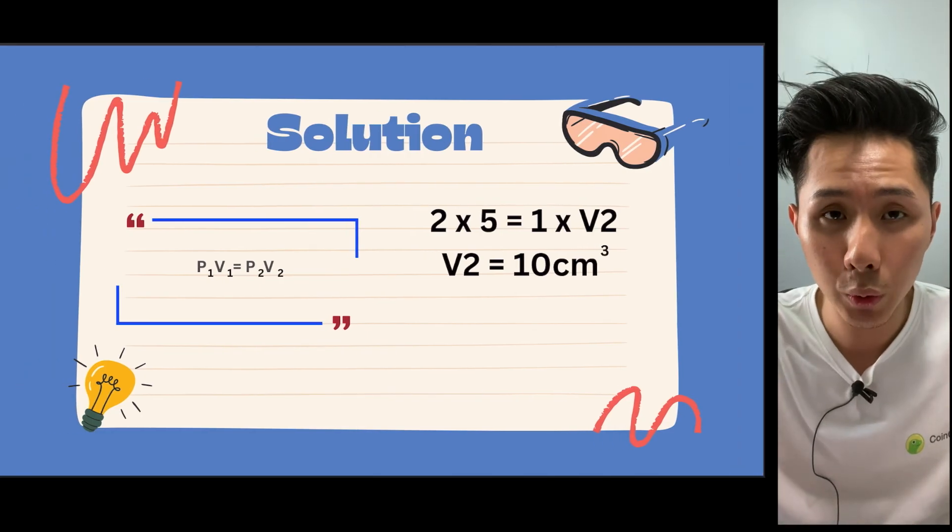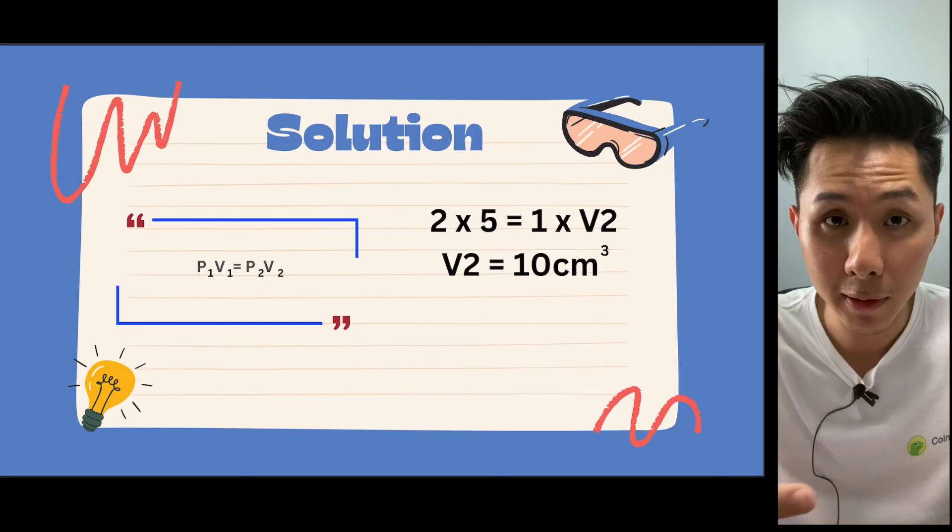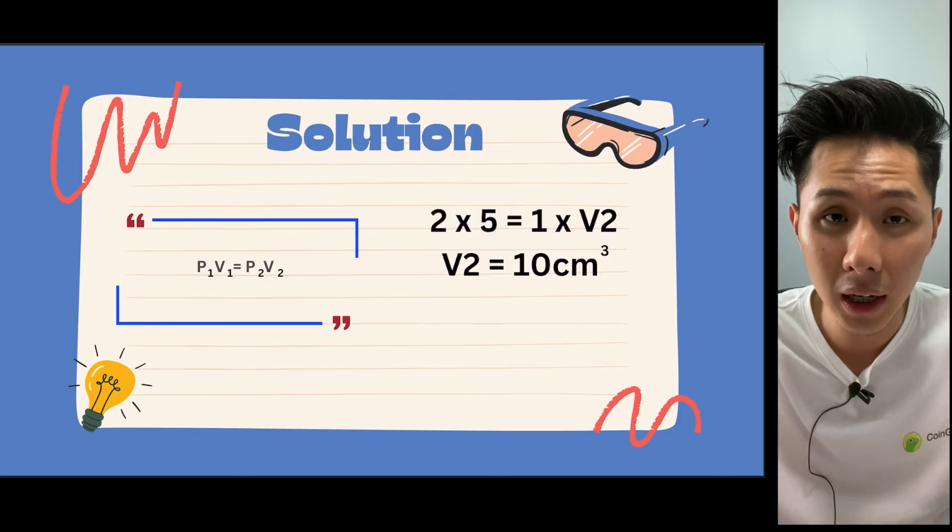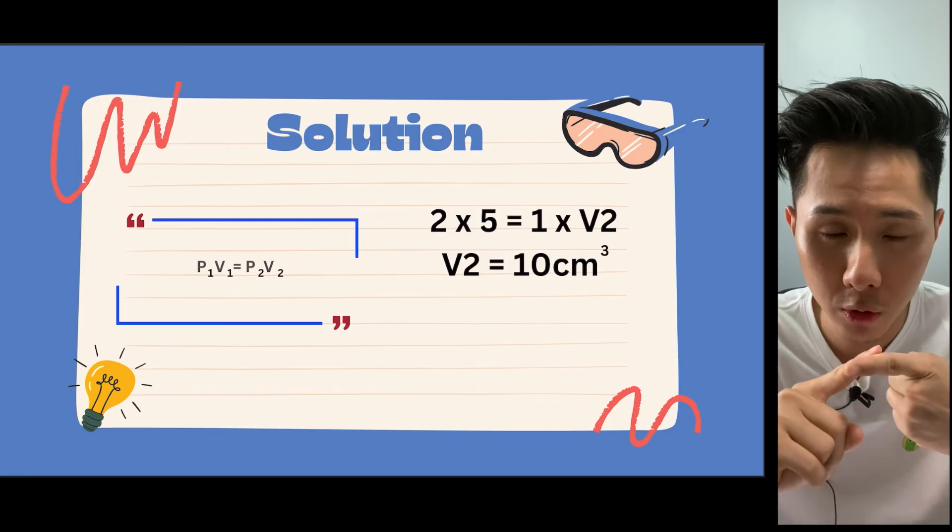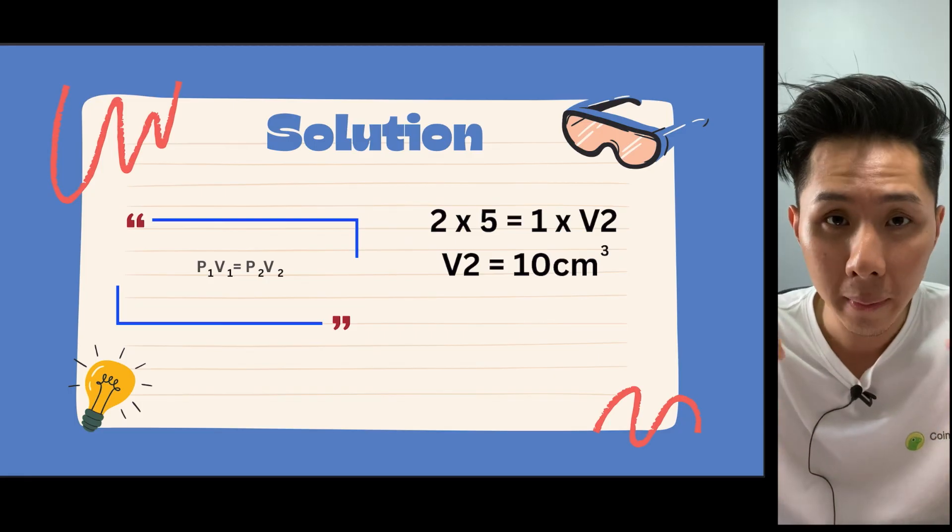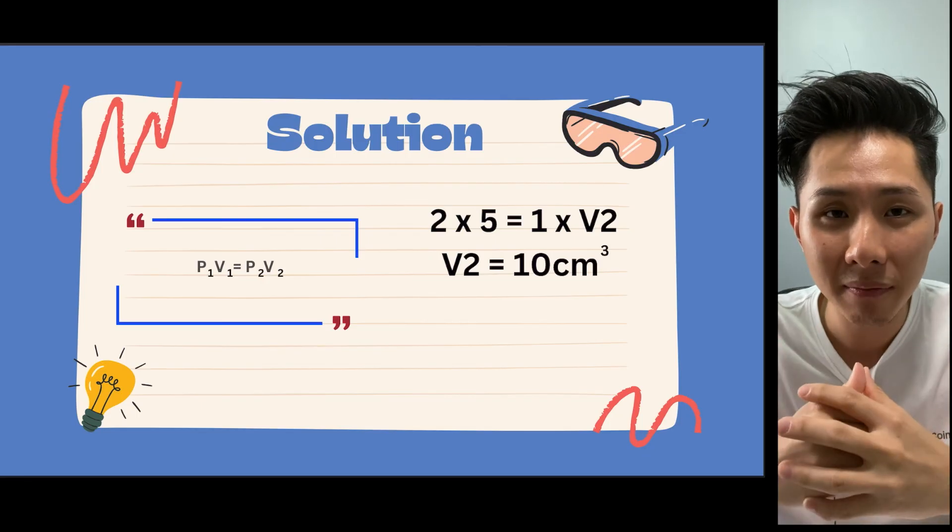So in this chapter, we looked into the three different types of matters and their properties, and we dove deeper into the characteristics of gas particles. We learned about Brownian motion and also Boyle's Law. And I'll see you in the next video. Thank you so much for watching.